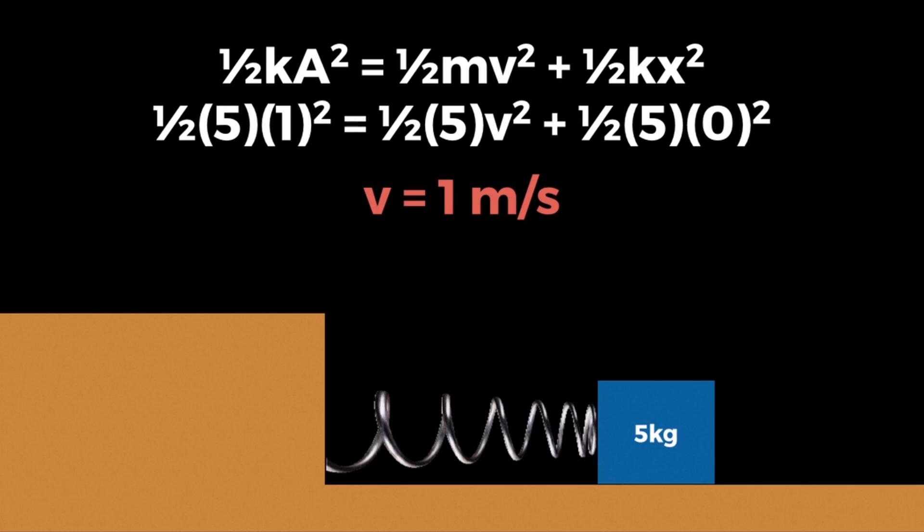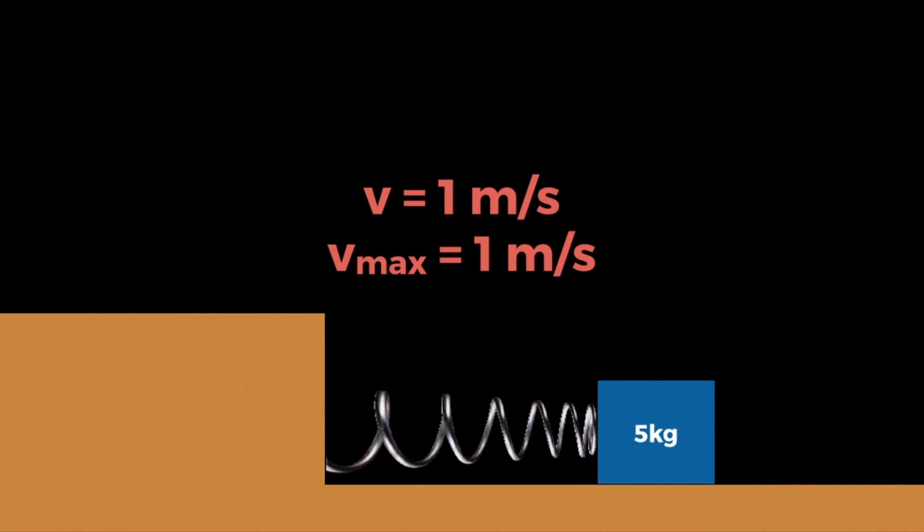When an object is at the equilibrium position, it is going the fastest it will ever travel. Since at equilibrium the object is traveling at one meter per second, the maximum velocity of the object in simple harmonic oscillation is also one meter per second. That's all you really need to know about the basics of forces and energies in a system undergoing simple harmonic oscillation. That's all for today — the more you know, the better you are.